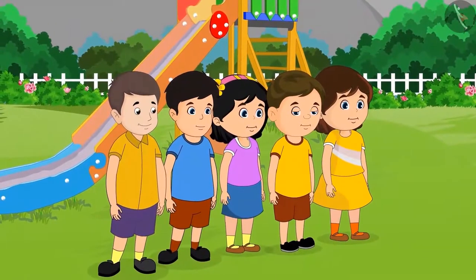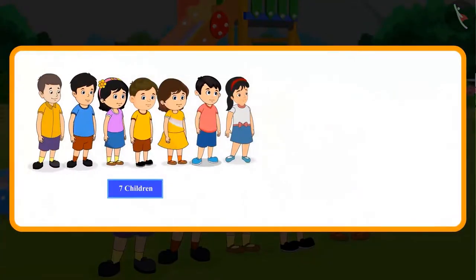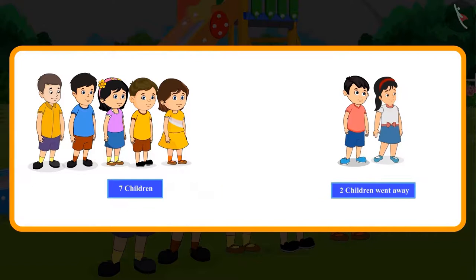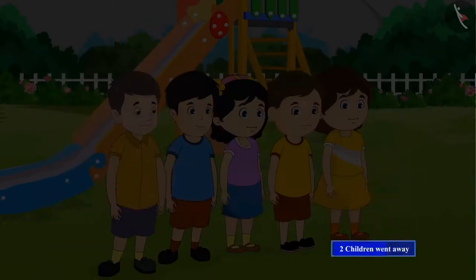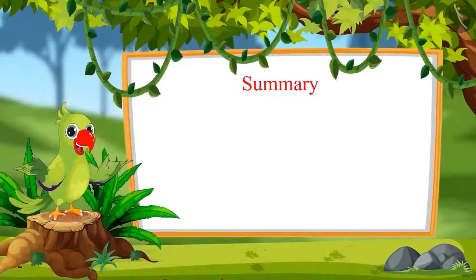Now can you tell me how many children are left in the park? Out of seven children, two children went away, so there are five children left. You had the same answer, right? Very good!